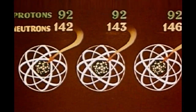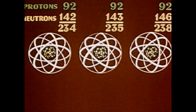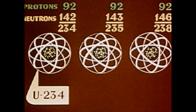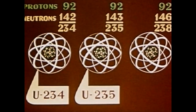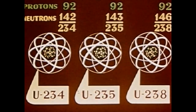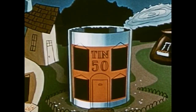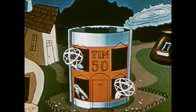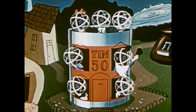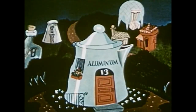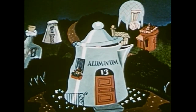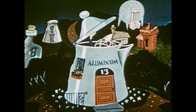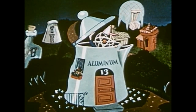That means uranium has three natural isotopes: U234, U235, and U238. Some elements, such as tin, have a great number of natural isotopes. Others, such as aluminum, have only one.